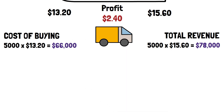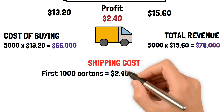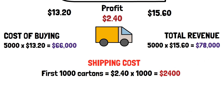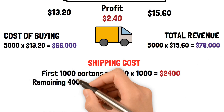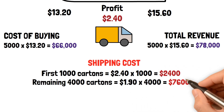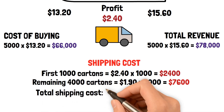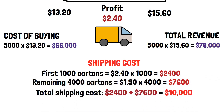The cost of buying the peaches from the growers would be $66,000 — i.e., 5,000 times $13.20. The total cost of shipping: for the first 1,000 cartons, $2.40 times 1,000 equals $2,400; for the remaining 4,000 cartons, the cost is $1.90 times 4,000 equals $7,600. So the total shipping cost is $2,400 plus $7,600, or $10,000.